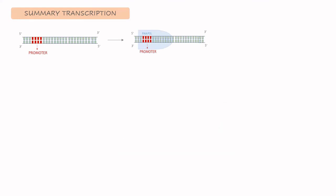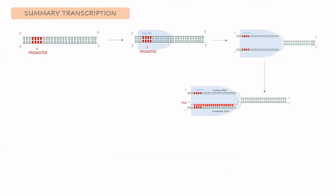Let's do a quick summary of transcription and translation. In transcription, the DNA has a promoter that is recognized by the RNA polymerase, which creates an opening and separates both chains. Then the RNA polymerase starts synthesizing the RNA sequence, and when it reaches the stop sequences it is released from the complex. For bacteria, this is already the messenger RNA.